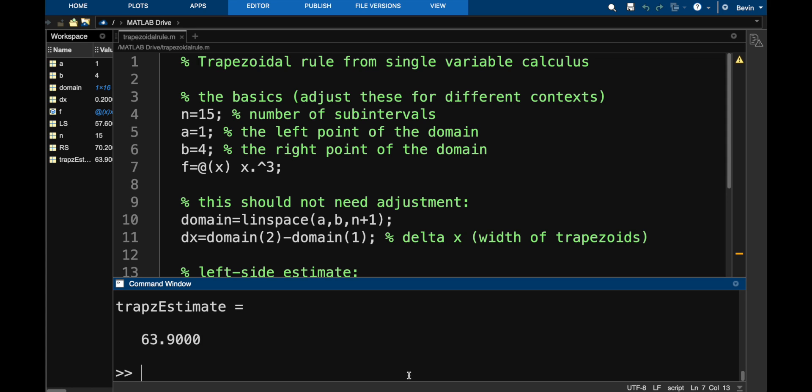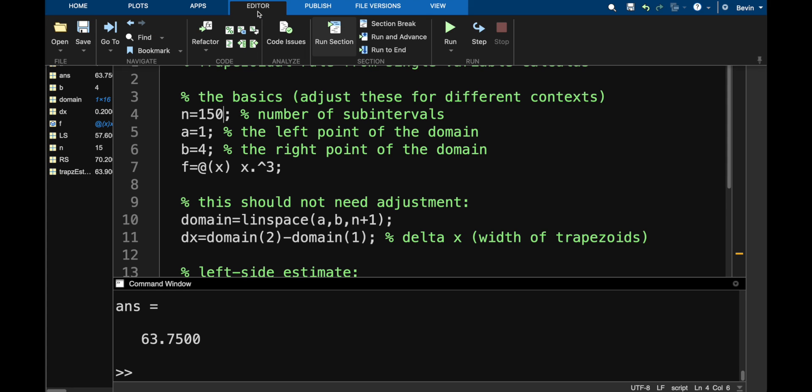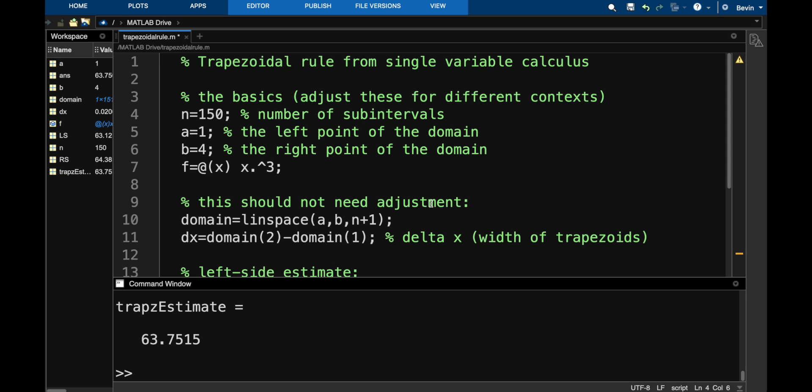And we get 63.9. What is it actually? Well, that's just a question of anti-differentiation. So x to the fourth over 4 evaluated at b equals 4 is 4 to the fourth divided by 4 minus 1 to the fourth divided by 4. That's the true value. And you can see that we have indeed estimated it. So we got 63.9. The true value is 63.75. What if I make this 150 subintervals? That's kind of a lot. If you imagine 150 trapezoids, we get much closer. So since these estimates can be tedious to do by hand, like I would never want to do 150 subintervals by hand, you can use this script to compute the trapezoidal rule.